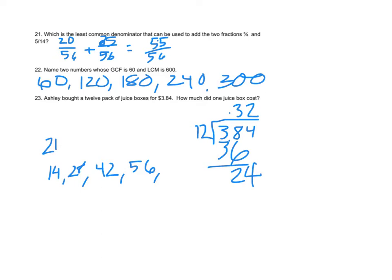When I make the denominators 56, I have to change the numerators. I multiplied 14 by 4 and 8 by 7. So 7 times 5 is 35, and 4 times 5 is 20. That gives me 55/56.